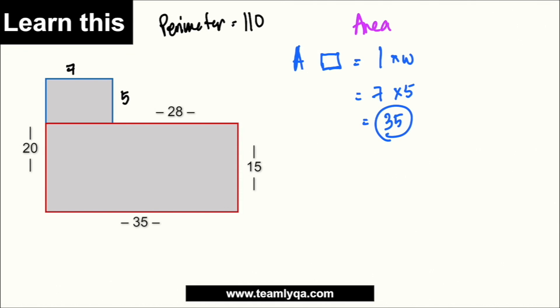And then, yung pangalawa naman na area. Which will give me, again, dahil itong mahabang ito, di ba, ay also rectangle din siya, or parallelogram. So, ang gagawin ko, length times width din. Ang length ngayon niya is 35. Ito yung buong mahaba. And then, ang width niya would be 15.